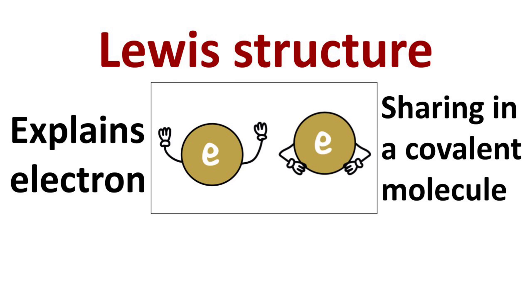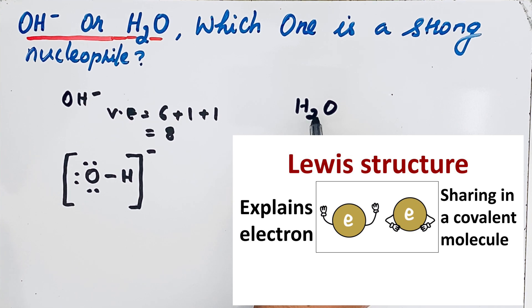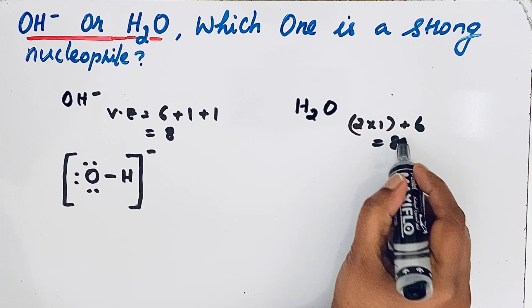Now let us draw the Lewis structure of H2O. For H2O we have 2 hydrogen atoms. Valence electrons in each hydrogen atom, since we have 2 hydrogen atoms: 2 times 1 plus we have only 1 oxygen atom. Oxygen valence electron 6, so that gives 8.